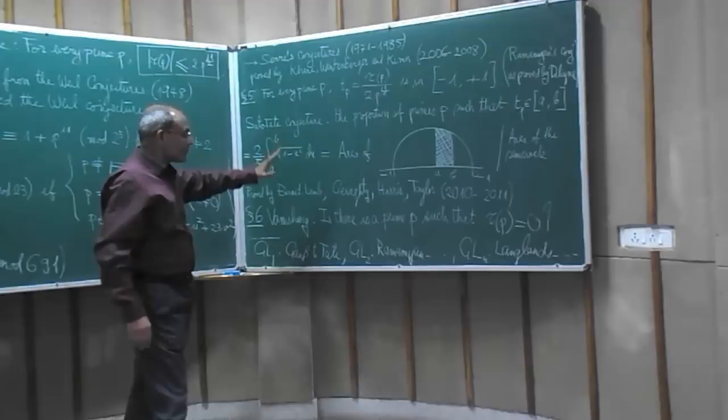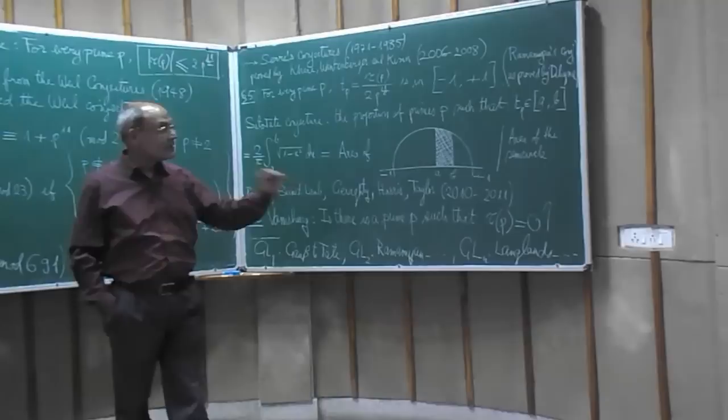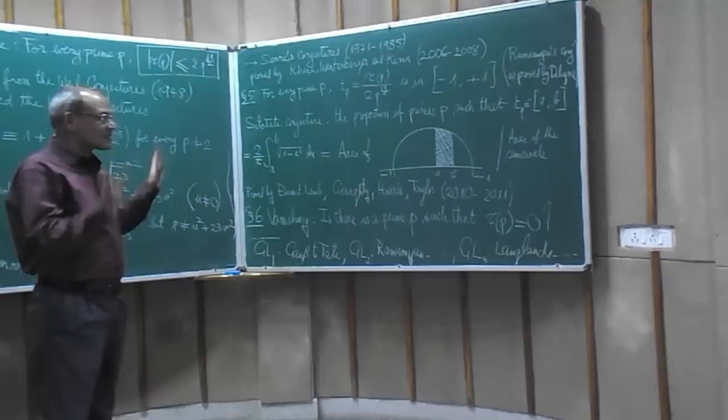So that's not the end of the story of tau. There are still things which can be studied. For example, it's unknown whether there's a prime number p such that tau of p is equal to 0.